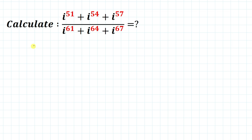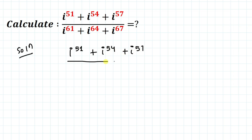Welcome to Root 2 Mathematics. In this video we're going to solve this interesting question: calculate iota to the power 51 plus iota to the power 54 plus iota to the power 57, divided by iota to the power 61 plus iota to the power 64 plus iota to the power 67. Here iota represents the imaginary unit.